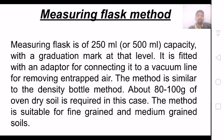Then we will discuss the measuring flask method. The measuring flask has a capacity of 250 ml or 100 ml with graduation levels. We remove the air using an adapter and add 100 grams of oven dry soil. The same weighing procedure as the density bottle method is followed. The measuring flask method equations are the same.